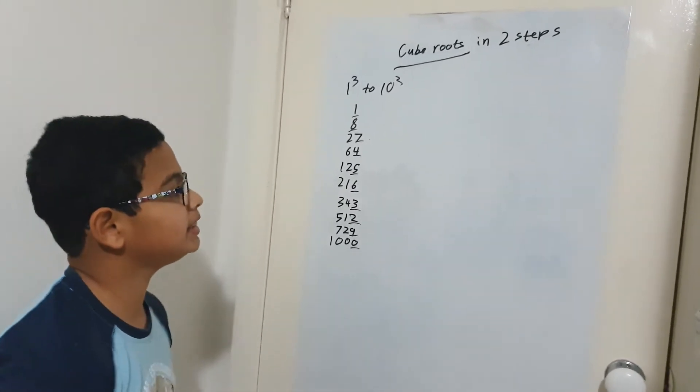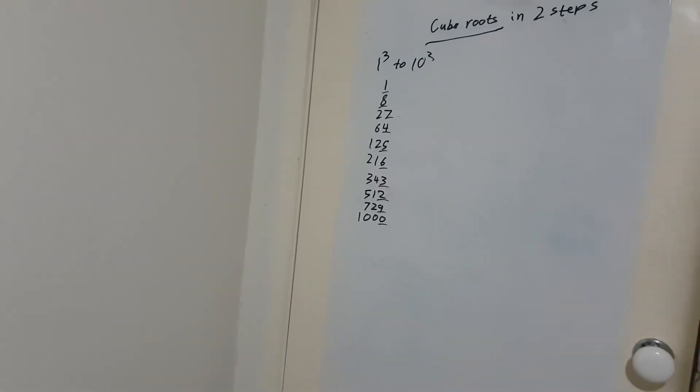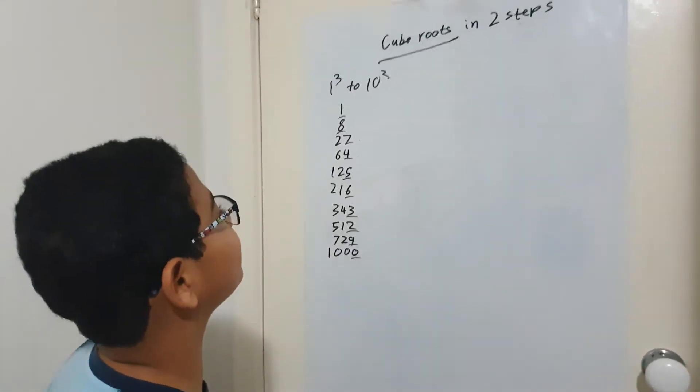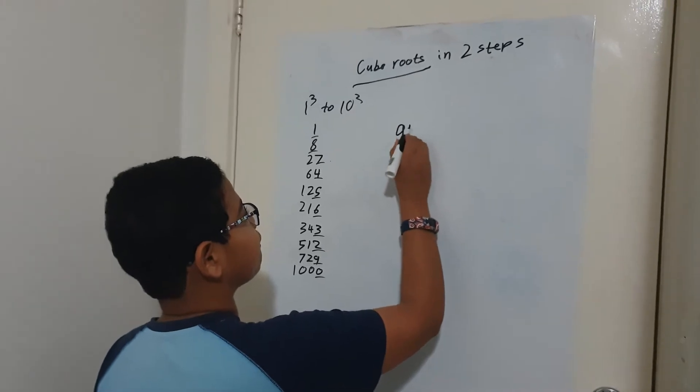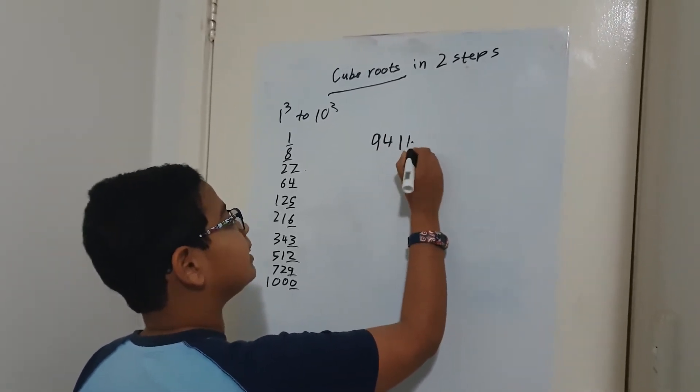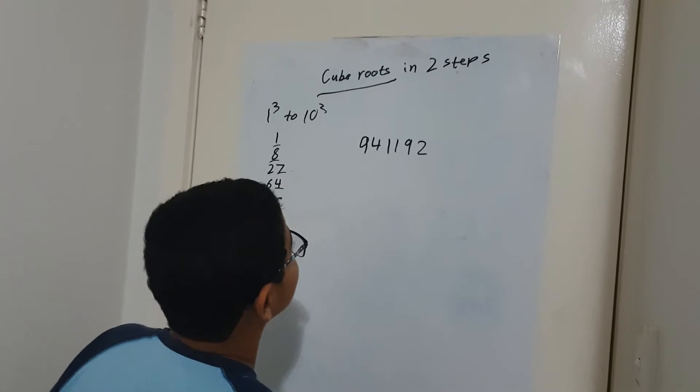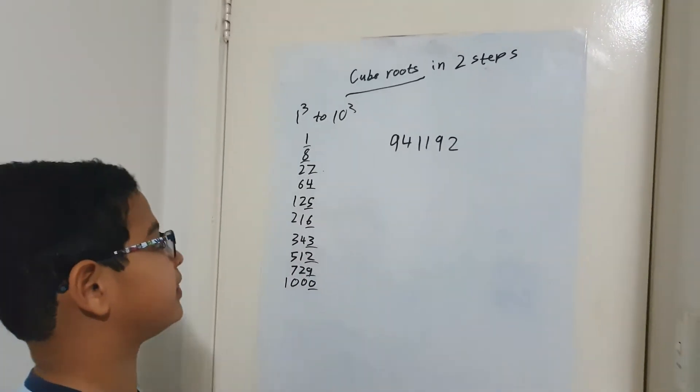So let me just take an example. The cube I'm going to do is 941192. So I'm going to show you how to calculate the cube root of that.